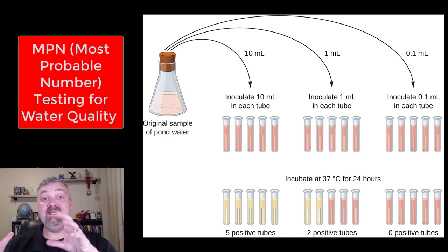Hey everybody, Dr. O here. This is the MPN or most probable number method of determining the amount of contamination you have in a sample.